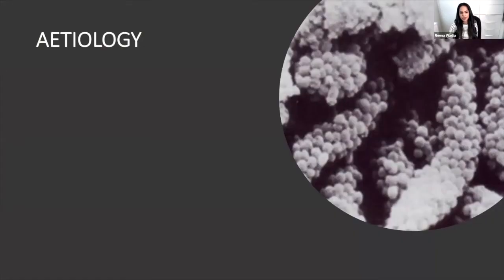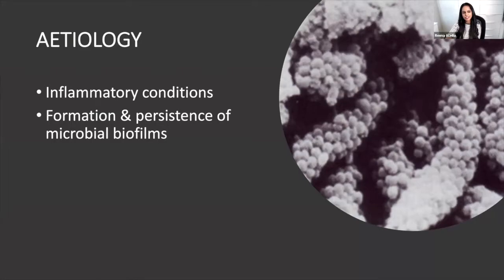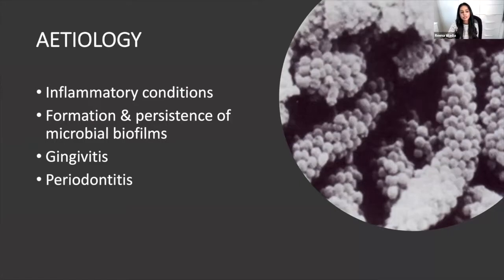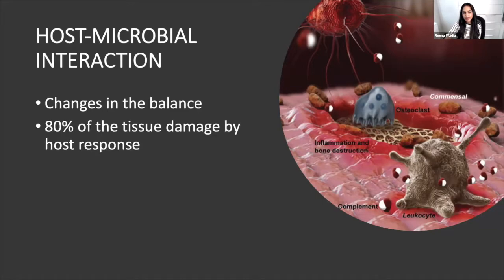I want to remind you of the etiology of perio because things have changed a little. Inflammatory conditions are linked with general health conditions like cardiovascular disease and diabetes because they're all inflammatory. The key buzzword now in perio is biofilms — that's the word we use, not plaque. It's the formation and persistence of microbiome biofilms that essentially causes either gingivitis, which is reversible, or periodontitis, which is irreversible.